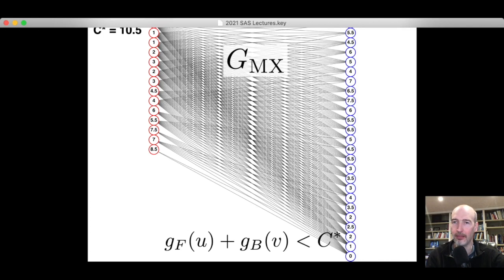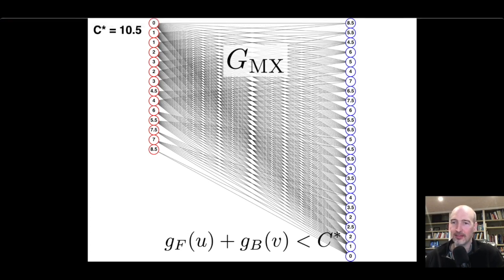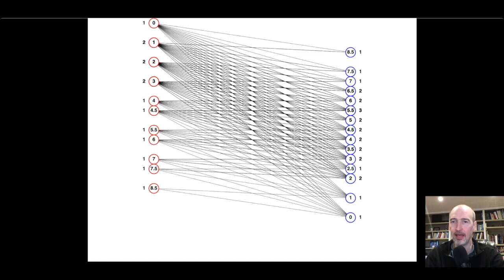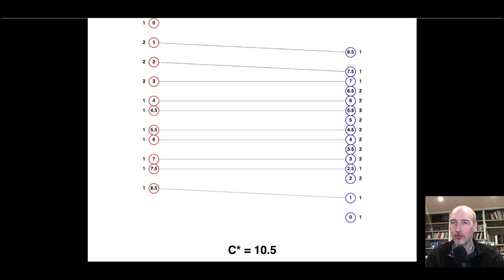At the bottom of the graph we can see that 8.5 plus 8.5 equals 17, which is greater than c*, so there are no edges between those extreme nodes. Rather than drawing all edges — which gets very messy — we merge states together according to their g costs, label the number of states at each level, and draw only the edge to the very last node meeting the condition. This makes the graph much easier to read.